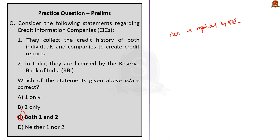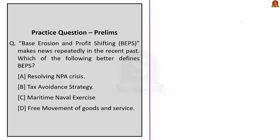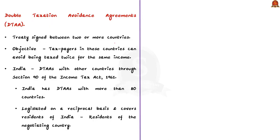With these basics, let us move on to the next MCQ of the day. It is about the concept called Base Erosion and Profit Shifting — which of the following better describes BEPS? Before answering this question, let us look at a concept which is very much related to BEPS, called Double Taxation Avoidance Agreement or DTAA.